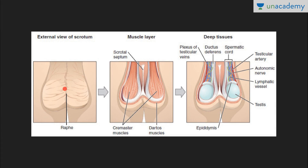Here is the external view of the scrotum. The raphe is the thick tissue visible here. The scrotal septum divides the scrotum into two testicular sacs containing the testis. Cremaster muscles form the spermatic cord, and dartos muscles form the scrotal septa and scrotal wall. The deep tissues show the testis and contents of the spermatic cord — blood vessels, nerves, and the ductus deferens or vas deferens.